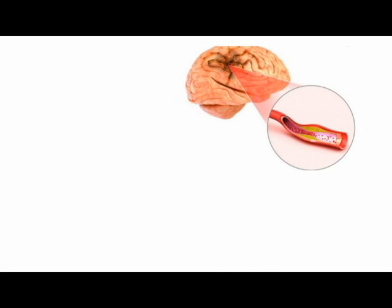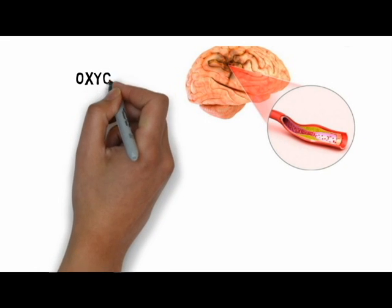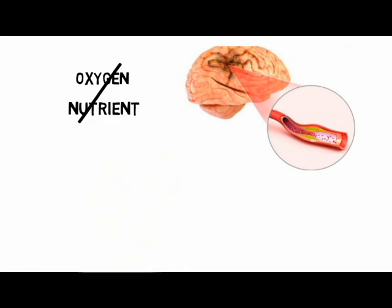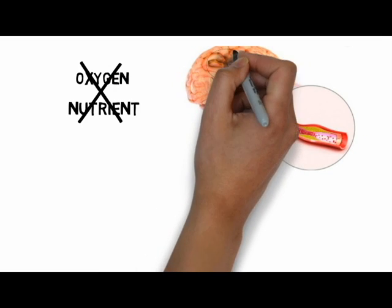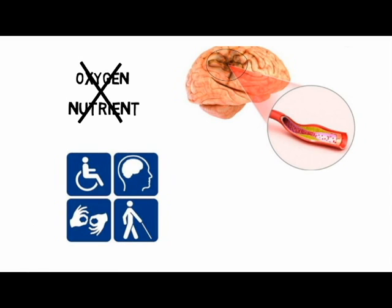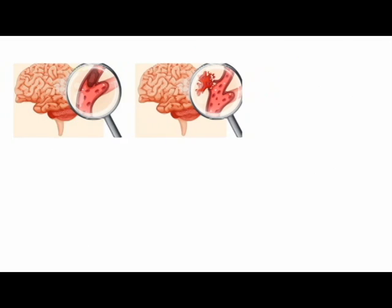Stroke is an abrupt interruption of blood flow to the brain, due to which there is no oxygen and nutrient supply to that particular area of the brain, leading to death of brain cells. Once brain cells die, they generally do not regenerate, and devastating damage may occur, sometimes resulting in physical, cognitive, and mental disabilities.